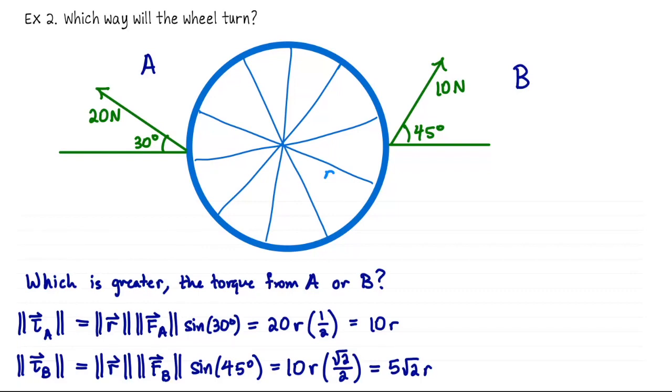Square root of 2 is 1.7 something, so 5 times the square root of 2 is not going to get us all the way up to 10. That means that the turning effect from person A is greater than the turning effect from person B. So this wheel is going to turn clockwise. Okay, that concludes our lesson on torque. Thank you for your attention.